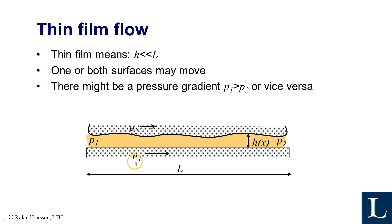We also assume that one or both surfaces may move and there may be some pressure differences — there might be some pressure pushing the fluid through the film if P1 is bigger than P2, for example.